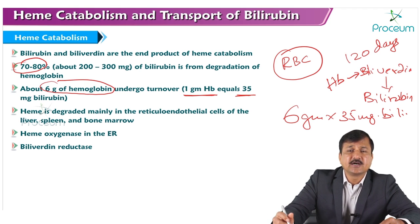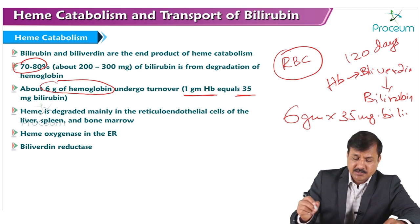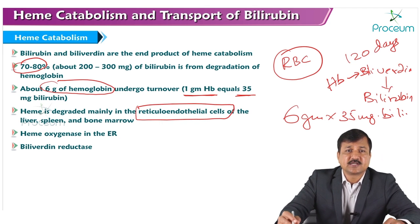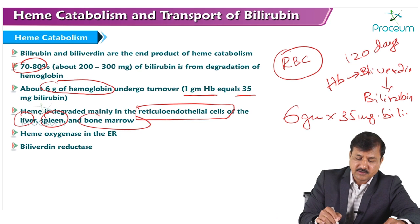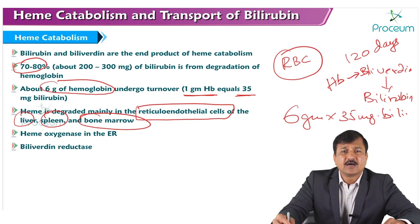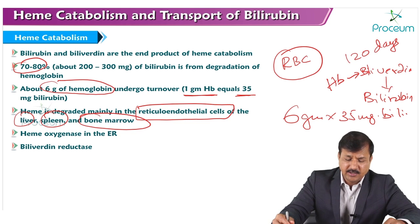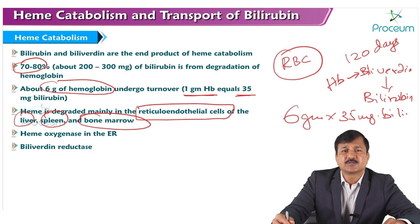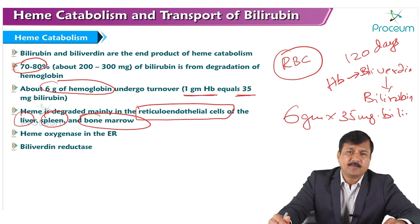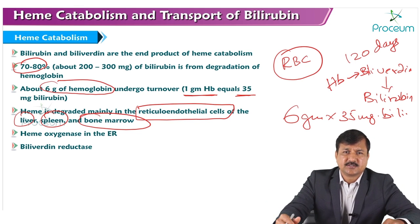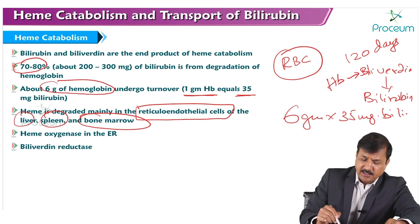Where exactly is bilirubin formation occurring — where is heme degraded? Heme is degraded mainly in the reticuloendothelial cells, found in the liver, spleen, and bone marrow. Red blood cells, done with their 120-day lifetime, are removed from the system in the spleen. Reticuloendothelial cells in the spleen break heme into bilirubin, which is transported out of the spleen into the blood. From the blood, it is taken up by the liver, processed, and put into bile, going into the gallbladder and then the duodenum.